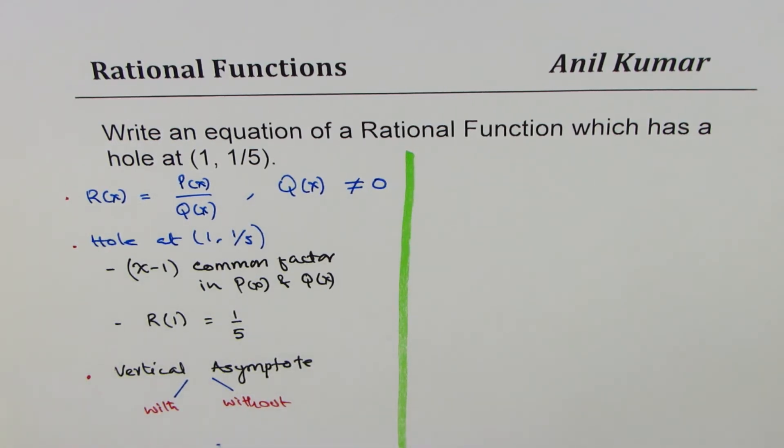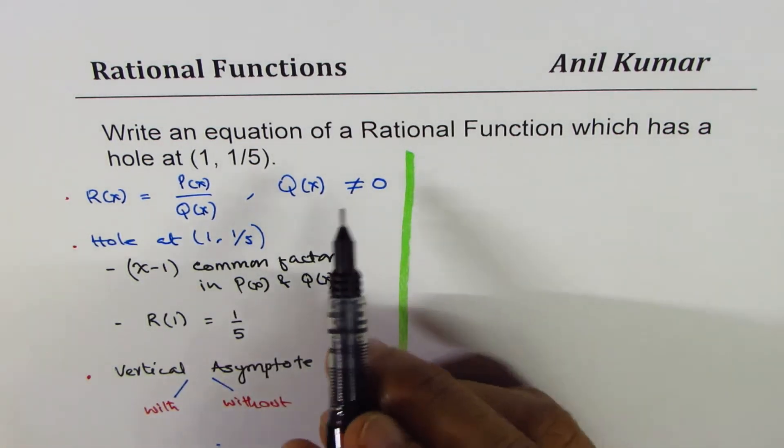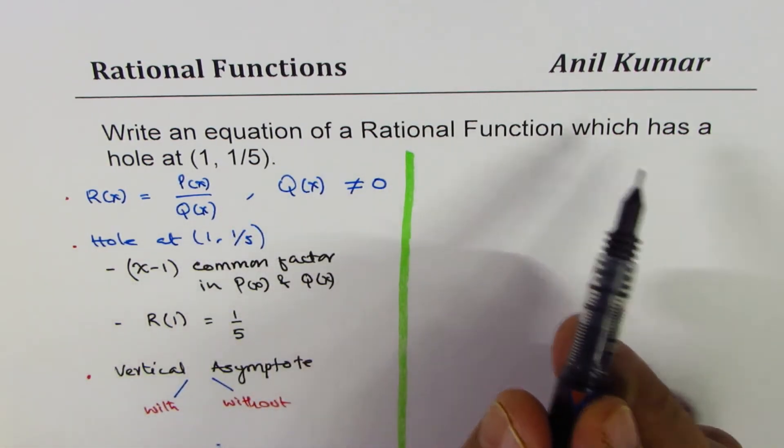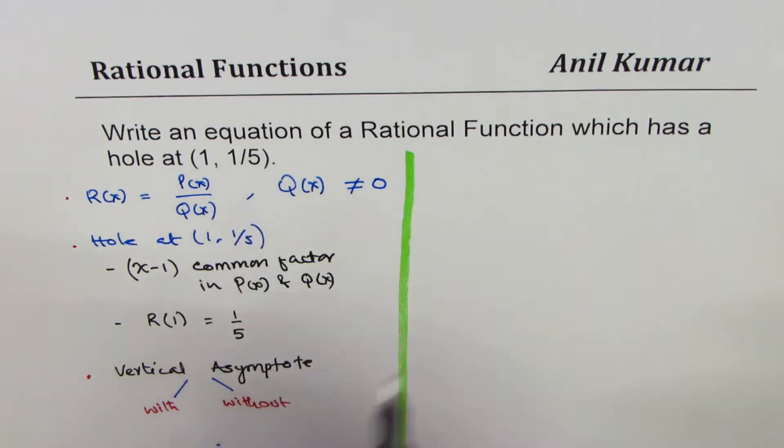Now let's get back to the question. We need to write an equation of a rational function which has a hole at (1, 1/5).